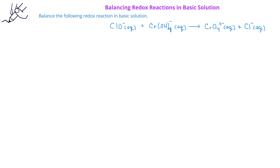We begin by assigning oxidation states. We'll assume that the oxide ion is minus 2, which means that for ClO⁻, the chlorine has an oxidation state of plus 1 in order to have an overall minus 1 charge on the ion. For Cr(OH)₄⁻ with an overall negative 1 charge, if each oxygen is negative 2 and each hydrogen is plus 1, then chromium has an oxidation state of plus 3. On the product side, since chromate has an overall charge of minus 2 and each oxygen is minus 2, chromium has an oxidation state of plus 6. The chloride ion has an oxidation state of minus 1.